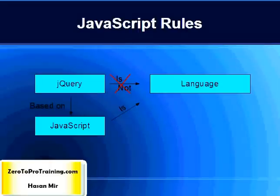jQuery is not a language of its own — it is simply a collection of JavaScript code. It follows all the same rules and is written the same way as JavaScript.